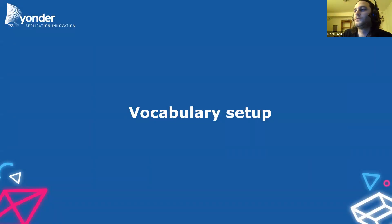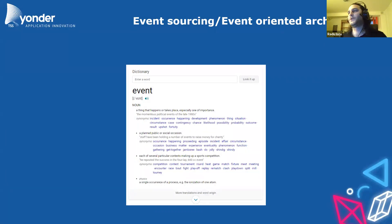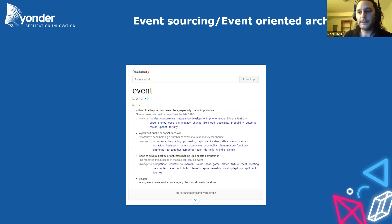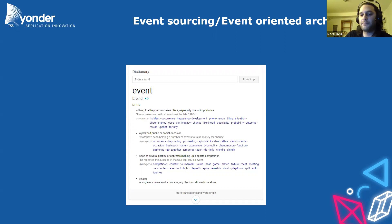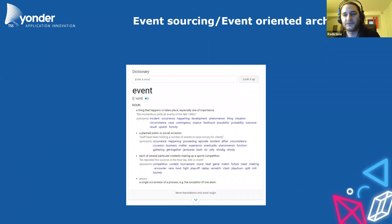Before we move on, we need to deal with some vocabulary. First things first: what is event sourcing and what are event-oriented architectures? An event is something that happens — we all know this from real life. An event has some associated information with it. Event sourcing applications actually track these events instead of maintaining a single state for the application like normal enterprise apps do. You can reconstruct the state whenever you want; the point is that we log everything that's happening in the application.